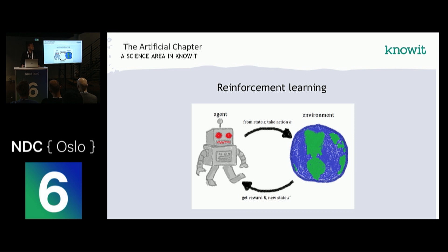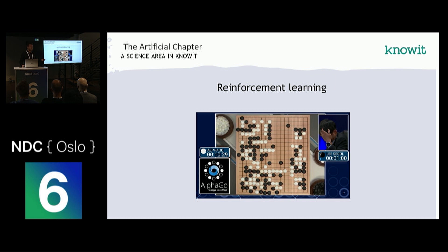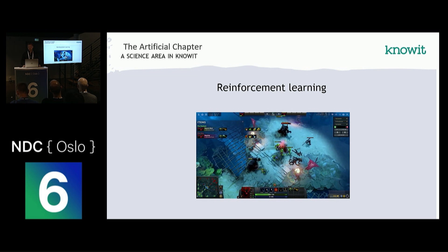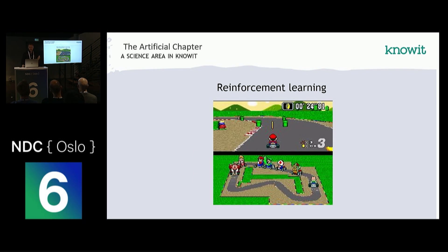We've made incredible progress in the reinforcement learning domain in recent years. AlphaGo is a great example — it managed to beat the best player in Go with moves that humanity had never seen before, and some of those moves are now taught at Go schools in China. I find it really interesting that humans can now learn from machines, and not just the other way around. More recently, OpenAI managed to create an AI that could beat some of the best players in the world at Dota 2, a real-time game — far more complex than traditional board games like chess. And my personal dream project is to create an AI that can beat me at Mario Kart.